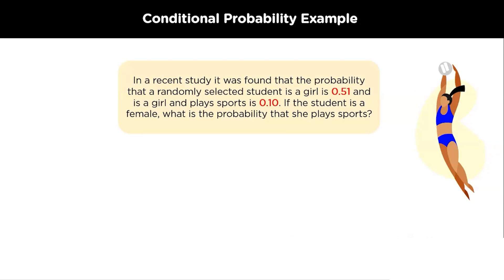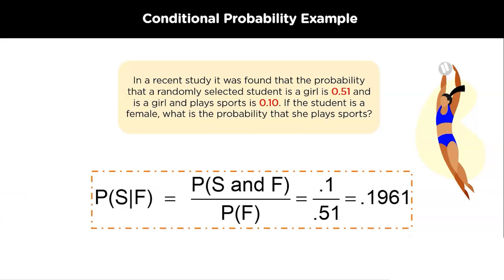Let's look at an example. In a recent study, it was found that the probability of a randomly selected student being a girl is 0.51, and the probability of being a girl and playing sports is 0.10. So, if the student is female, what is the probability that she plays sports? The probability that a student is female and plays sport is 0.10, and the probability that a student is female is 0.51. So, the probability that the student plays sport given that she is female will be 0.10 / 0.51, which comes out to be 0.1961.